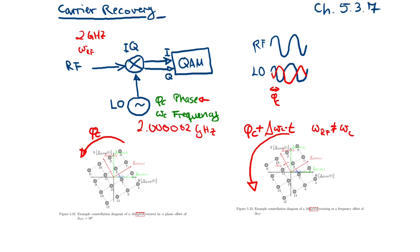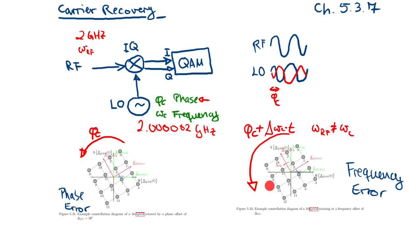Considering only the phase error, the constellation is rotated but fixed at that rotation. So if you find a calibration to measure the phase error, you can apply a back-rotation and then you are fine. But with a frequency error too, you cannot calibrate to one fixed phase error constellation — the whole constellation is constantly rotating over time, so the angle keeps changing. You therefore have to calibrate both the phase error and the frequency error.